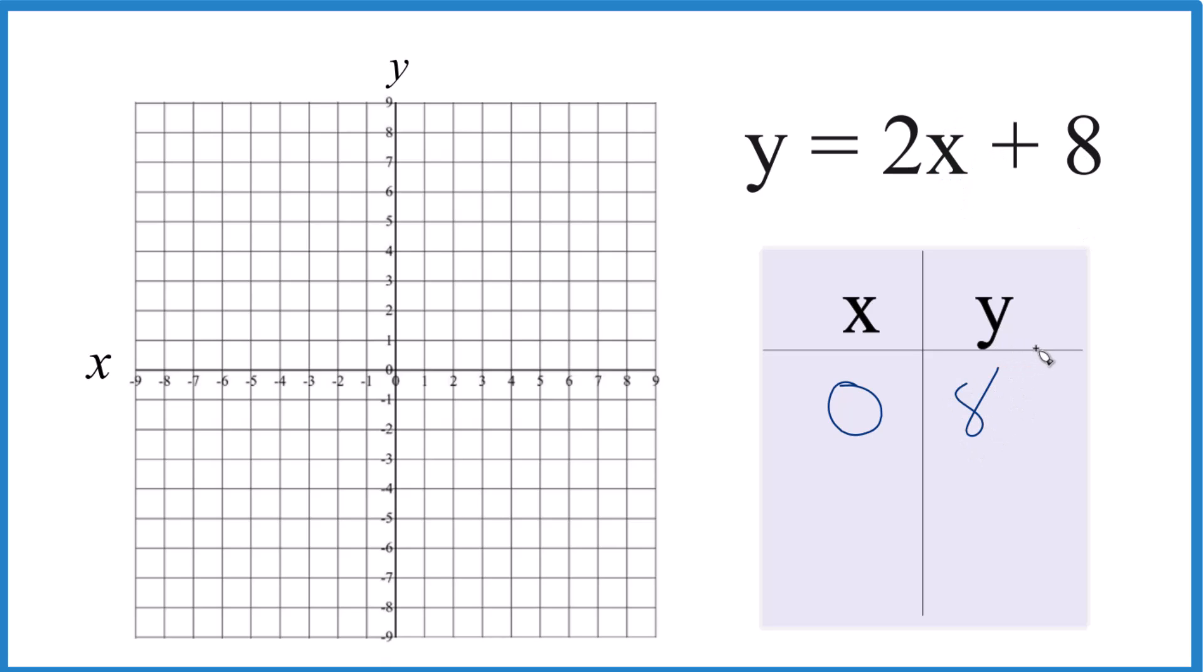that gives us 8. So how about if we put 1, 2 times 1, that's 2, 2 plus 8 is 10, that goes off my graph. So instead of 1, I'm going to do negative 1, because I want these to fit on my graph.